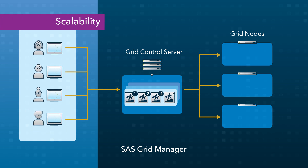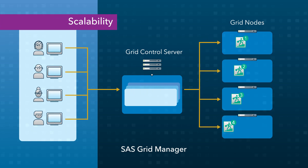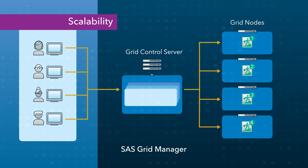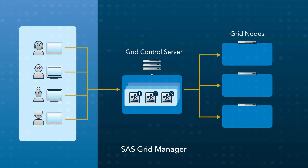At peak load times, additional nodes can be added to the grid to maintain acceptable throughput levels and then removed when the load eases.